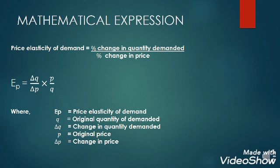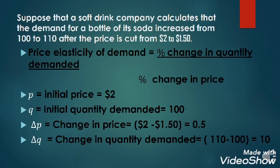Price elasticity of demand can be expressed as the percentage change in quantity demanded over the percentage change in price. Let's take this example. Suppose that a soft drink company calculates that the demand for a bottle of its soda increased from 100 to 110 after the price is cut from $2.00 to $1.50. Let us find the price elasticity of demand.